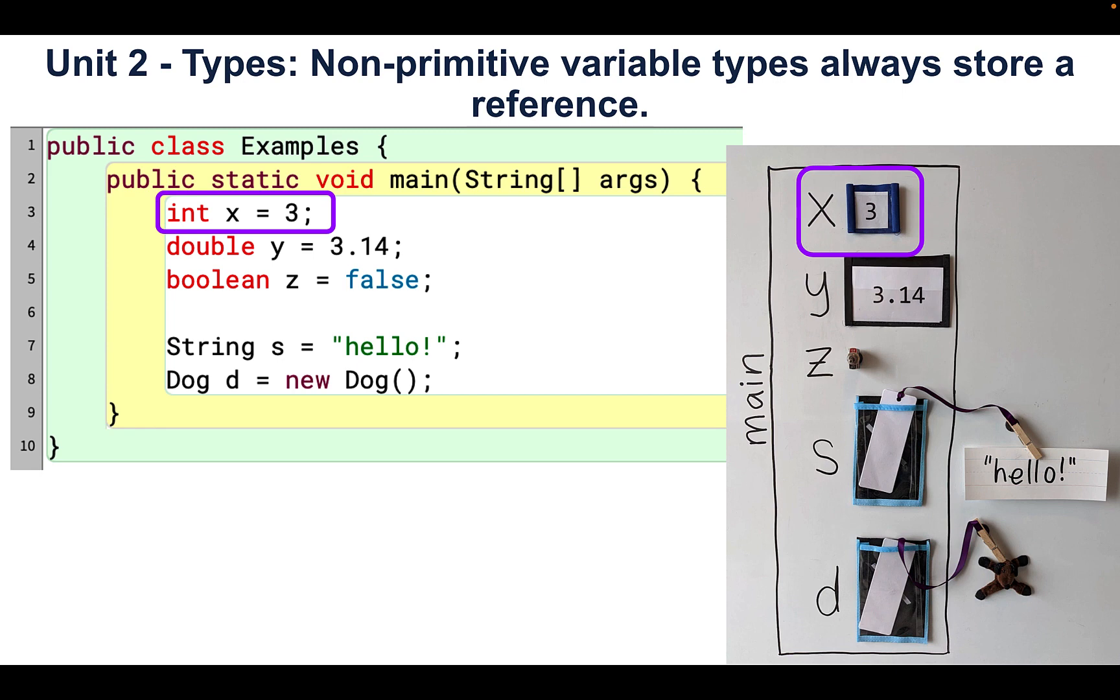We represent it as a pocket that can hold a number, and x stores the value 3. y is a variable of type double, which means it stores numbers with a decimal point. It takes more space in the computer to store double, so we represent that with a bigger pocket, and y stores the value 3.14.